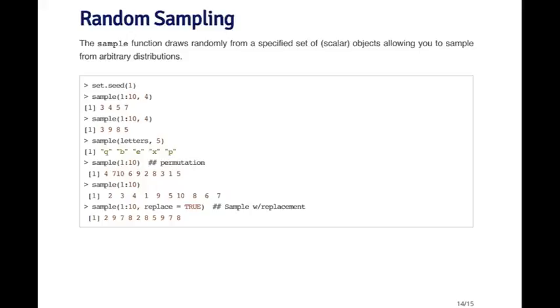Now, what happens if I don't specify anything? I just give it the vector of objects. So here I'm passing sample the vector 1 through 10. And if I don't specify anything else, what it does is it gives me a permutation of those. So here the vector 1 through 10 is just permuted in a random order. If I call it again, I get yet another permutation.